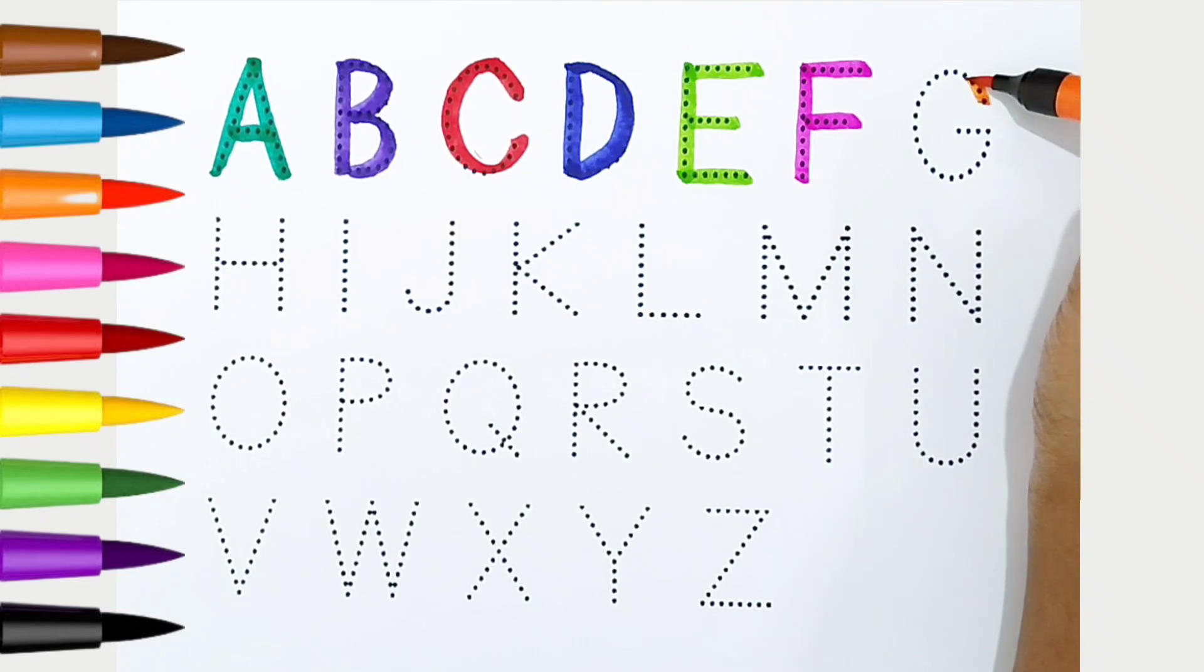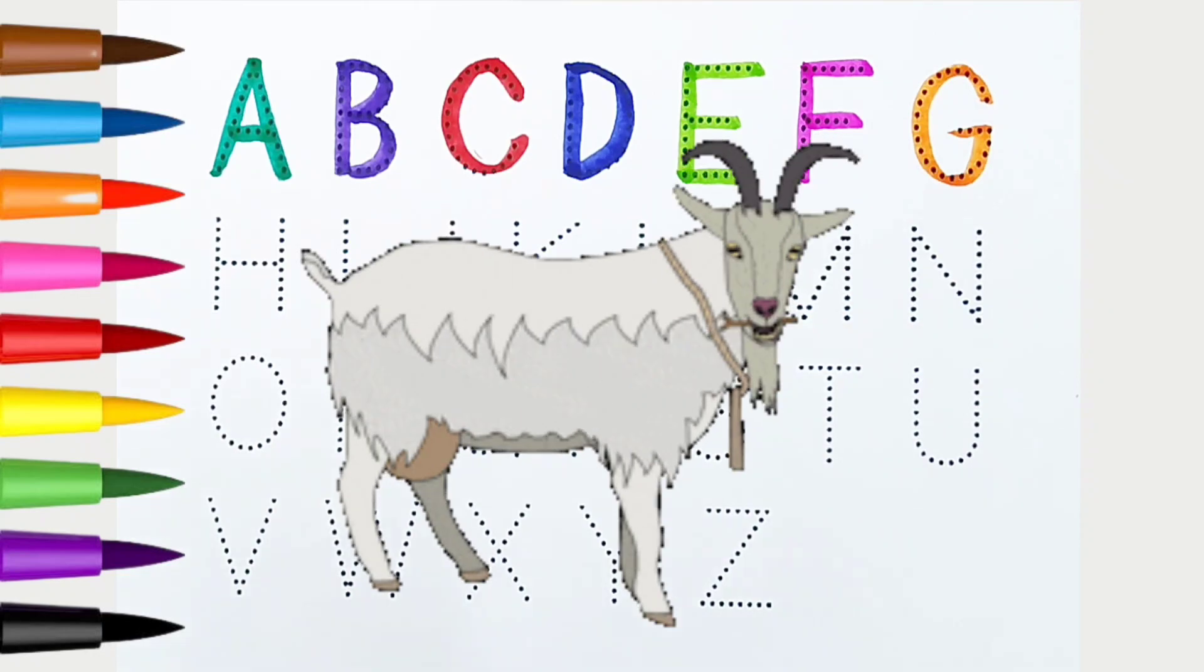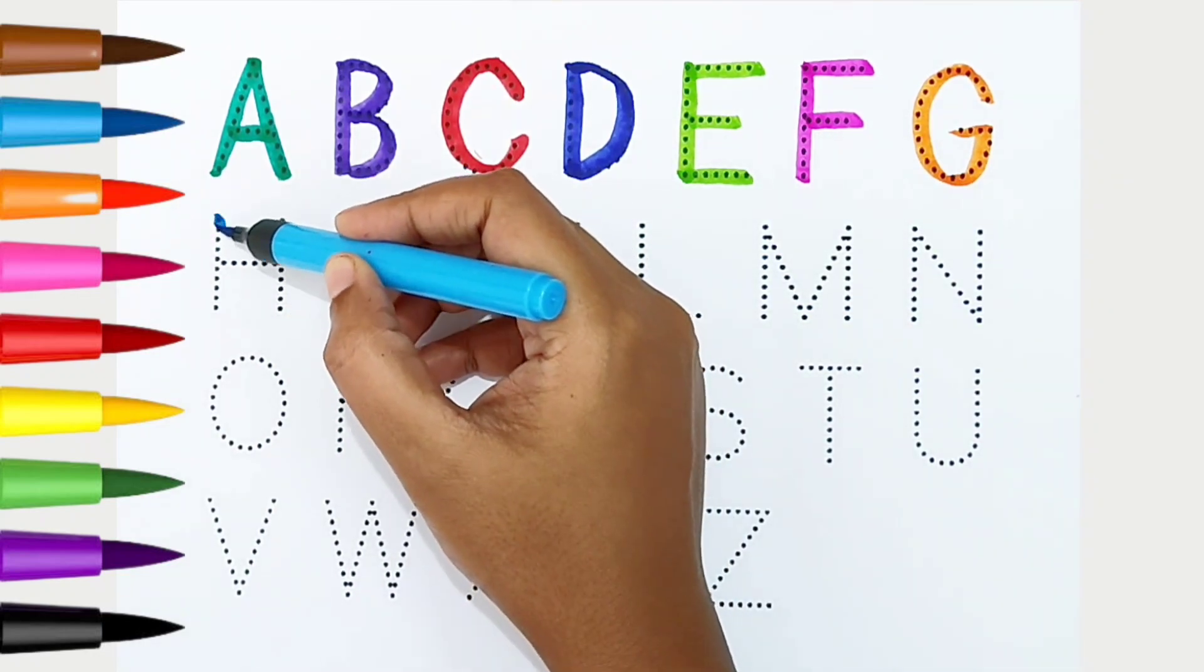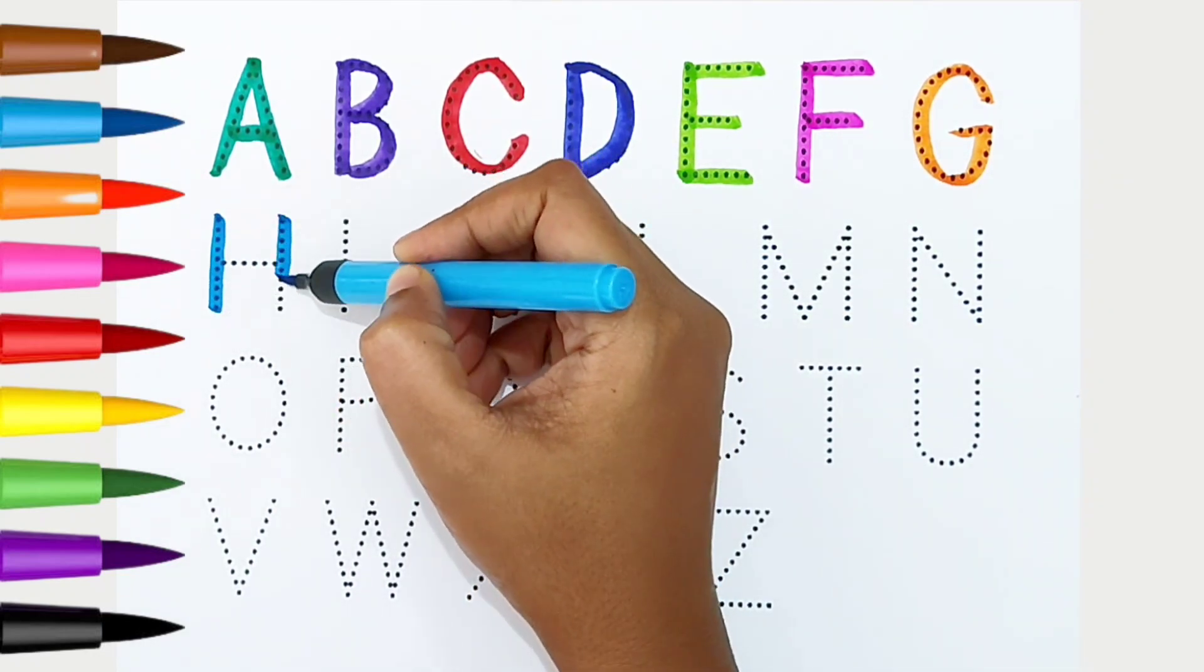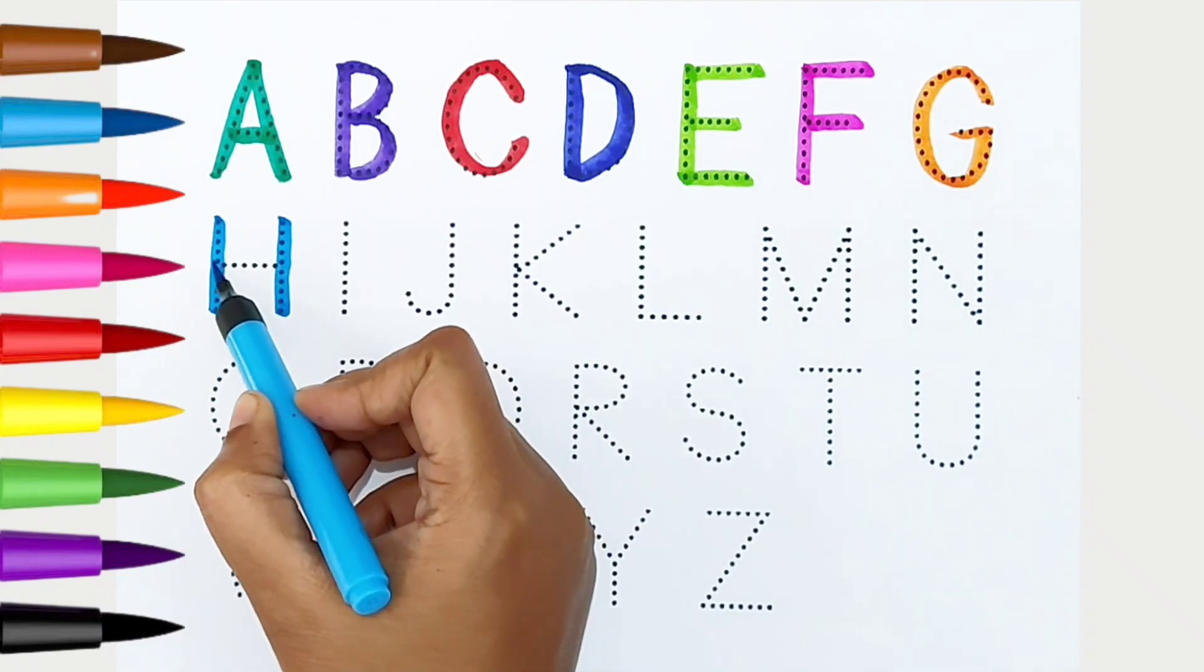G, orange color. G is for goat. H, light blue color. H is for helicopter.